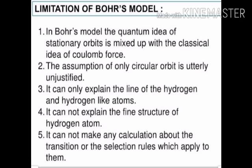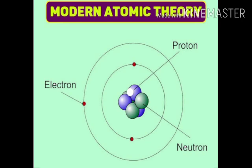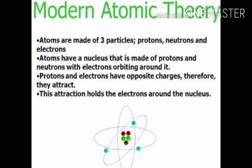Moving on to the modern atomic theory: the nucleus is at the center, containing protons and neutrons, and the electrons revolve around the nucleus in their fixed orbits or shells, as shown in the diagram. Modern atomic theory states that atoms are made up of three particles — protons, neutrons, and electrons. Atoms have a nucleus made up of protons and neutrons, with electrons orbiting around it in fixed orbits or shells.